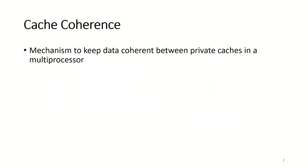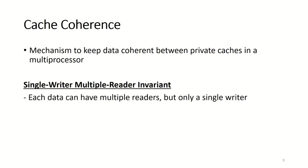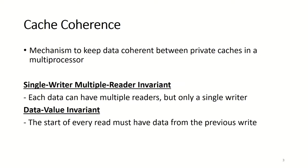Cache coherence is a mechanism to keep data coherent between private caches in a multi-processor. Cache coherence protocols follow two invariants: the single writer and multiple reader invariant, which means that each datum can only have multiple readers but only a single writer, and the data value invariant, meaning that the start of every read must have the data from the previous write. This ensures that each core of the processor gets the most up-to-date value.